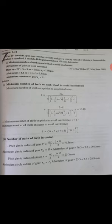That is 1.1 into 3 equals 3.3 mm. Addendum constant is 1.1.